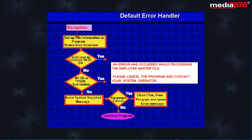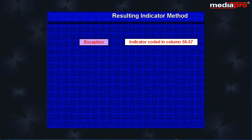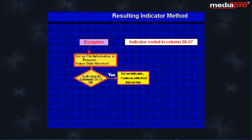The user can be presented with a message that is more informative. The resulting indicator method allows the program to take control when an exception occurs by coding an indicator in columns 56 and 57. Whenever an exception occurs, the system will set on the indicator and execute the next sequential instruction in the program.